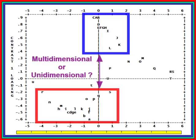Welcome. Today we're going to discuss the problem of multidimensionality in Rasch analysis. Rasch models a unidimensional variable, but real data can be multidimensional. So we're going to investigate if our data are multidimensional, how serious the multidimensionality is, and maybe what we should do about it.